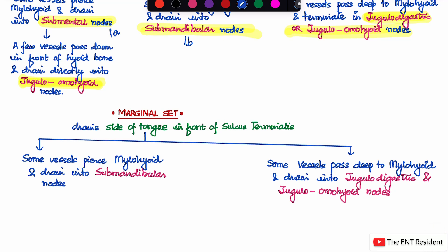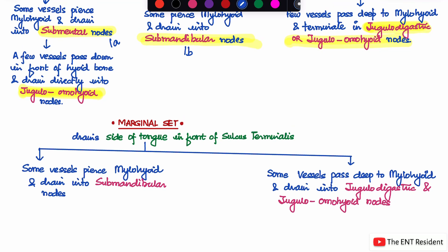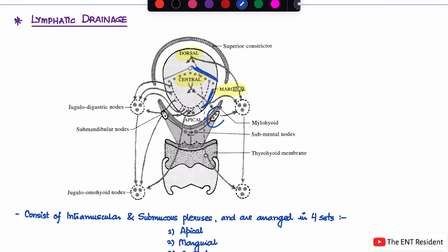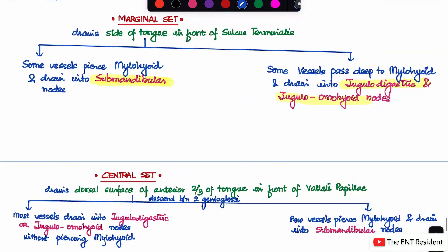The marginal set of lymph nodes drains the side of the tongue in front of the sulcus terminalis. They again have two different types of drainage: some vessels pierce the mylohyoid and drain into the submandibular nodes, and some vessels pass deep to the mylohyoid and drain into the jugular digastric and jugular omohyoid nodes. As seen in the image, these marginal nodes drain either to the submandibular nodes or to the jugular omohyoid or jugular digastric nodes.